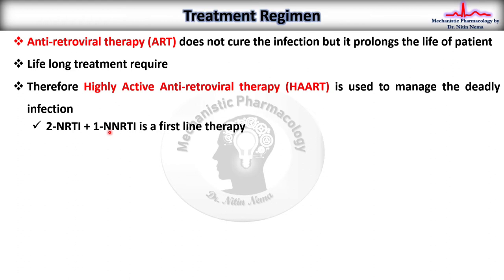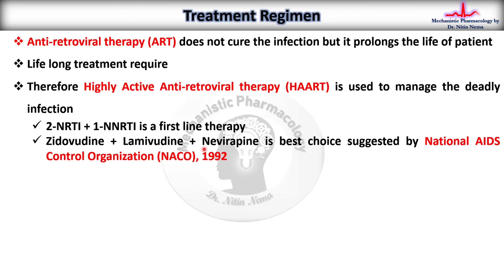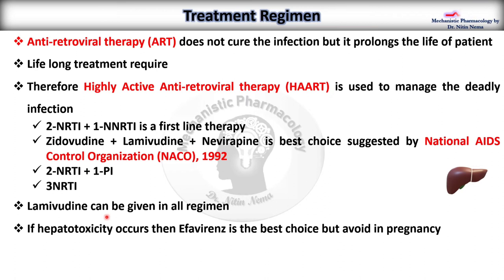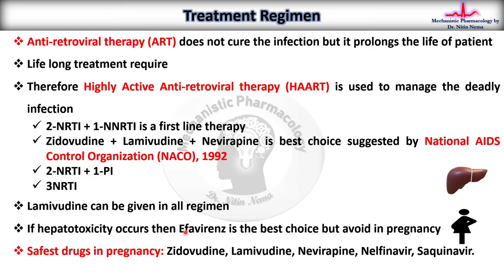The combination of zidovudine, lamivudine, and nevirapine is the best choice as suggested by NACO in 1992. Two NRTIs with one protease inhibitor is also effective, and three NRTIs may be given in some cases depending on clinical features. Lamivudine can be given in all regimens, but if hepatotoxicity occurs, efavirenz is the best choice, though it should be avoided in pregnancy. The safest drugs in pregnancy are zidovudine, lamivudine, nevirapine, nelfinavir, and saquinavir.